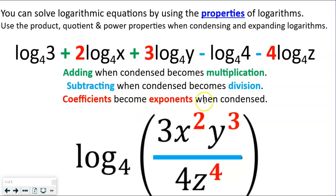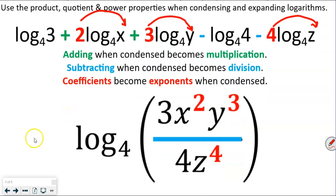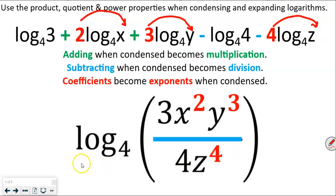Remember that the coefficients become the exponents when condensed. So the 2 goes up as an exponent on x, the 3 goes as an exponent on y, and the 4 goes as an exponent on z. So we get log base 4 of 3x² times y³, all over 4z⁴. These minuses go to the bottom, giving us 3x²y³ over 4z⁴, all taken to log base 4.